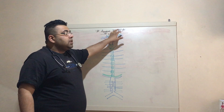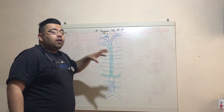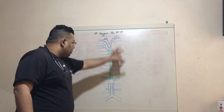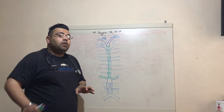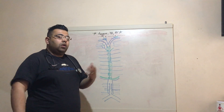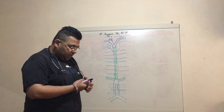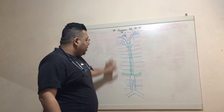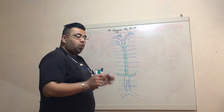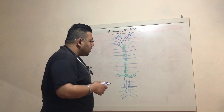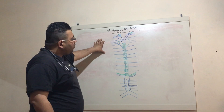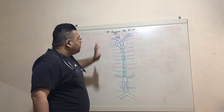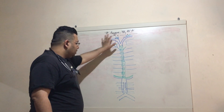Today's topic is the azygous, hemi-azygous, and accessory vein. This is a topic where students get confused because they really don't understand it, as it is a complete network of veins. I have made this structure already and I will label it with your presence.